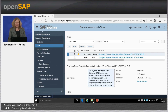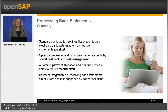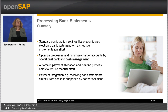Let's summarize this unit. SAP Business by Design provides standard configuration settings like pre-configured electronic bank statement formats to reduce implementation effort. An operational bank and cash management in the system optimizes the processes and minimizes the chart of accounts. Automatic payment allocation and clearing processes help to reduce manual effort for the end user. It is possible by payment integration scenarios from our partners to automate the complete payment process. In Unit 3, we will have a look at petty cash payments. Thanks for your attention.